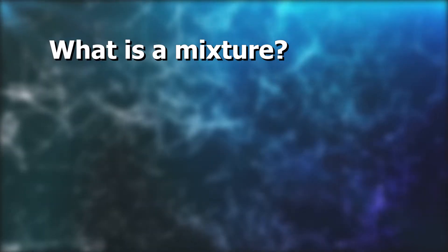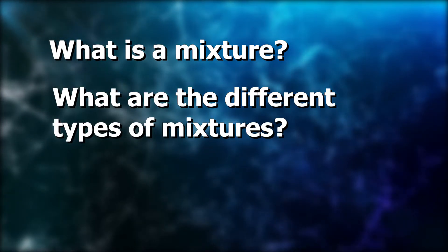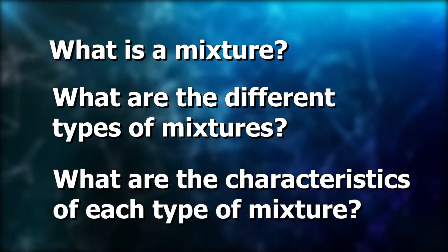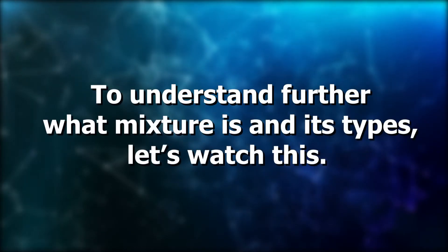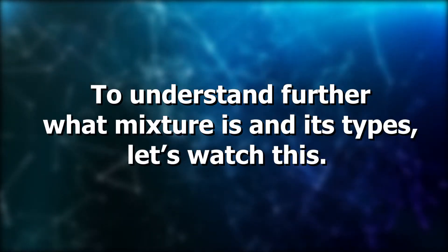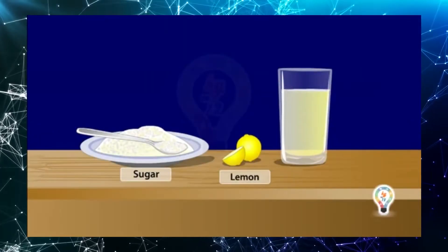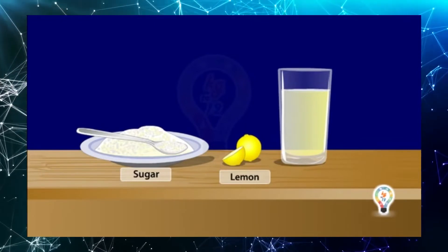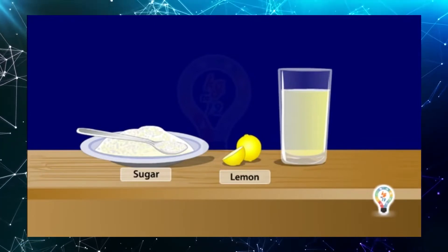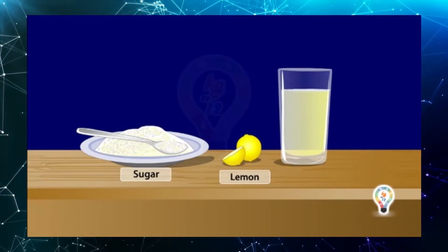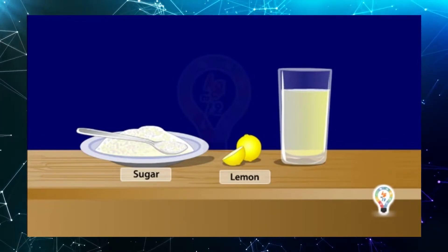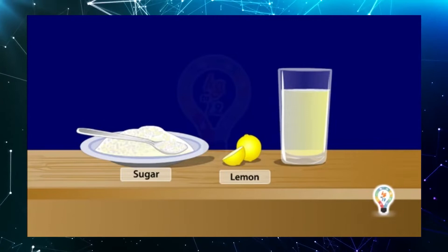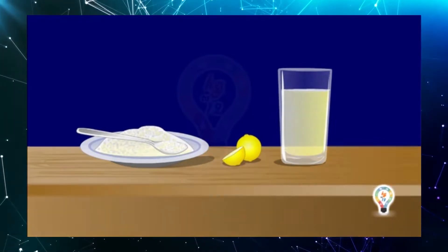What is a mixture? What are the different types of mixtures? What are the characteristics of each type of mixture? Have you ever seen lemonade? Do you know what items it contains? It contains lemon juice, sugar, and water. So we can say that lemonade is a mixture of lemon juice, sugar, and water. A mixture refers to the physical combination of two or more substances.